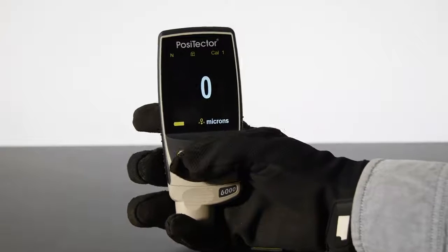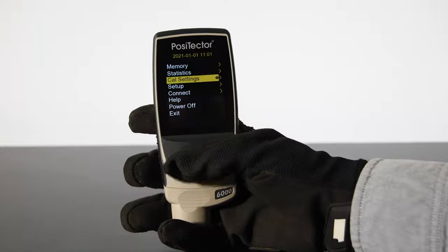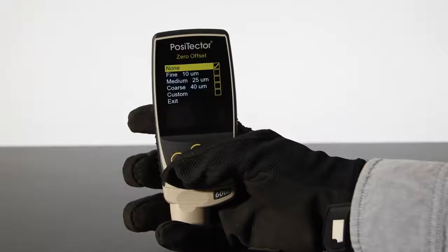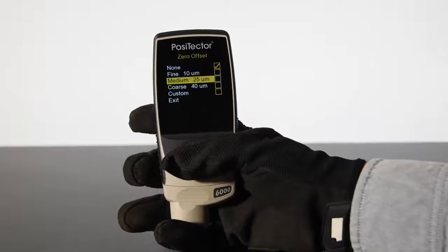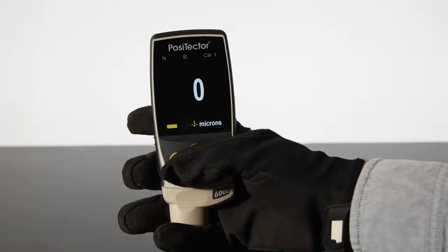For users wearing gloves or for those who prefer more conventional operation, the redesigned keypad can operate all gauge functions. The familiar, easy-to-use Positector menu structure is retained.